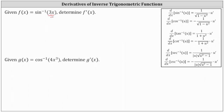So when applying the chain rule, if the inner function u is equal to 3x, we know we have to find du/dx, or u prime, which is the derivative of 3x with respect to x, which is 3.